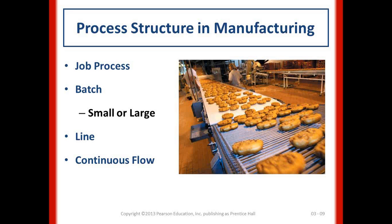Batch process can be small or large — the candy example applies here. The line process, like automobile manufacturing, runs for a continuous period of time making the same product. The last type is continuous flow, which runs 24/7, 365 days, and never stops — examples include an oil refinery, a nuclear power plant (which only shuts down once every 10–15 years), and pipeline flow.